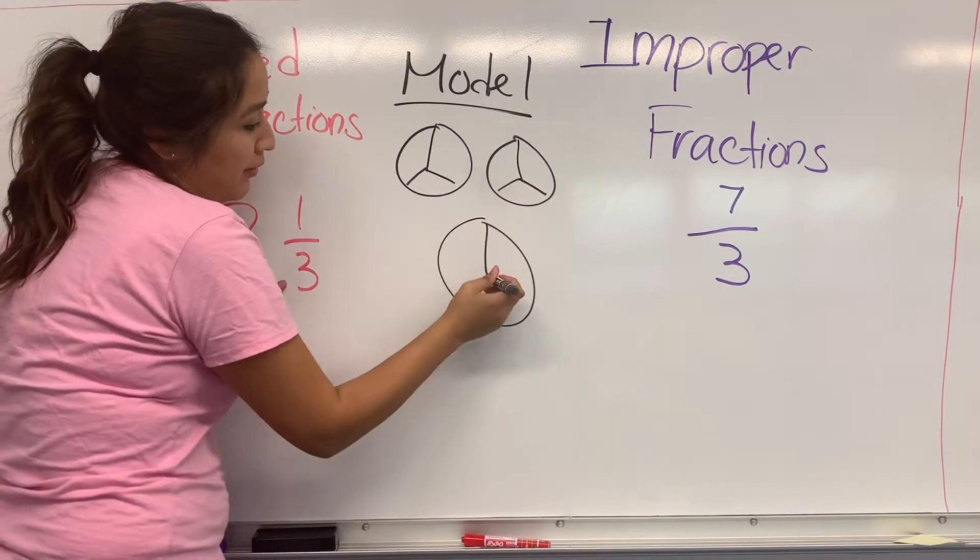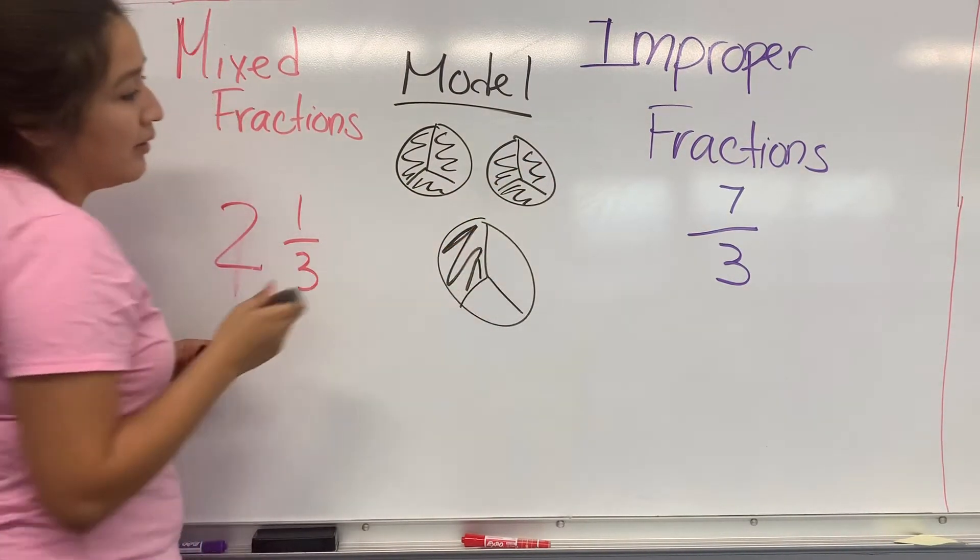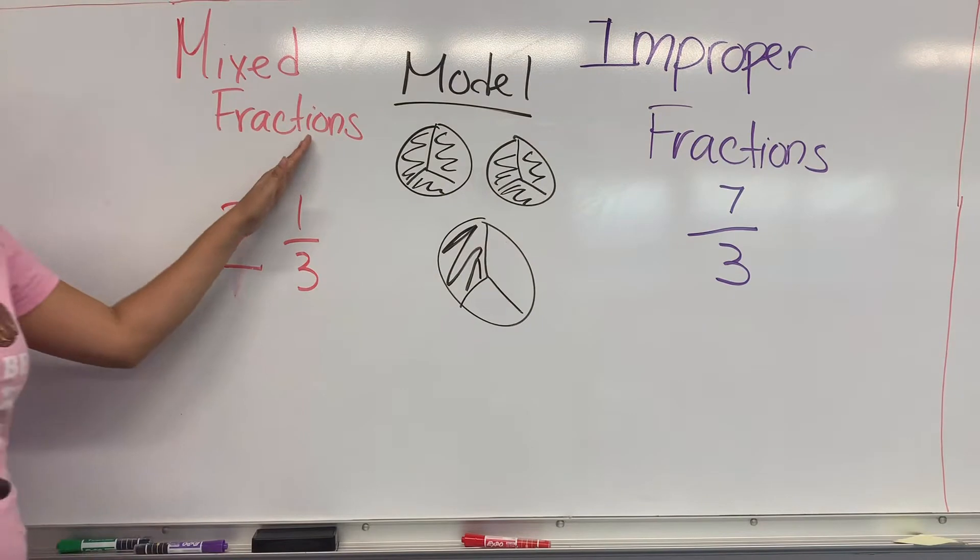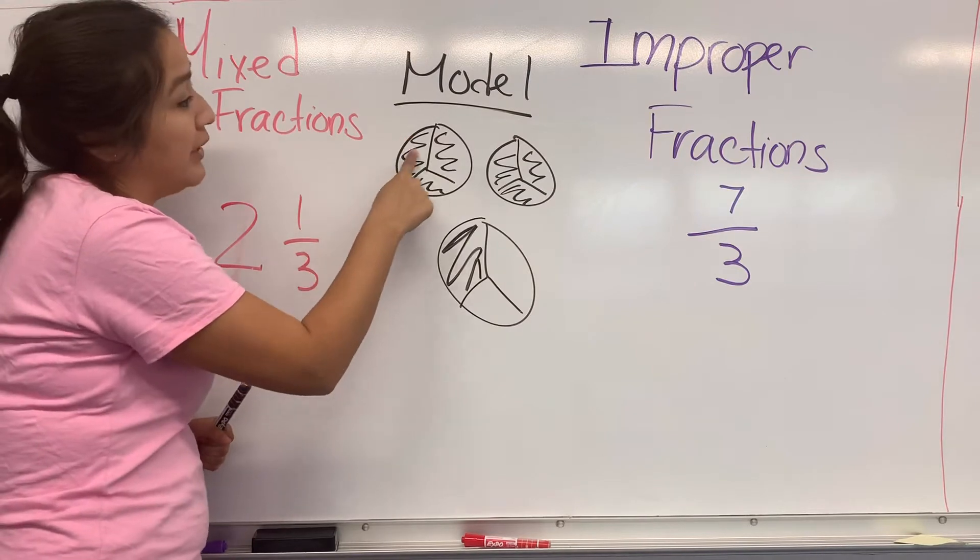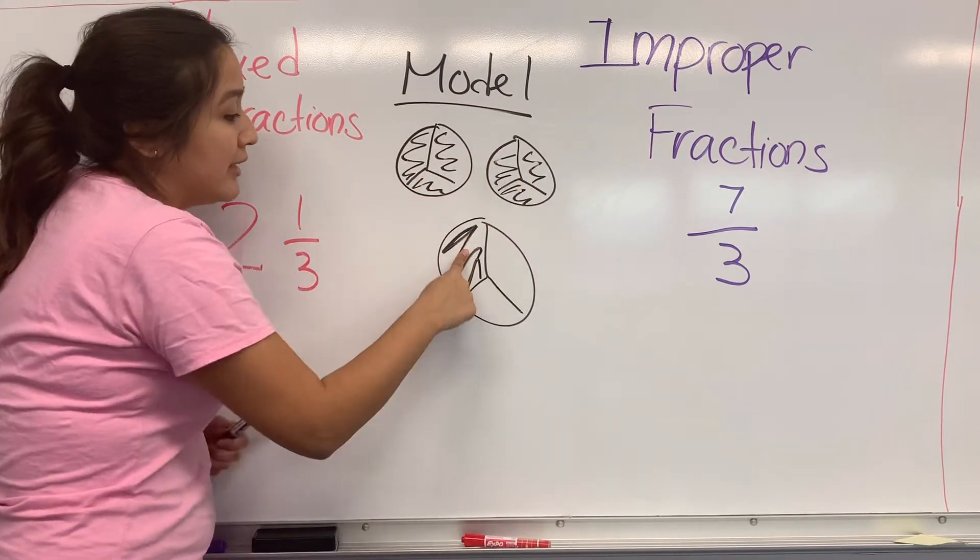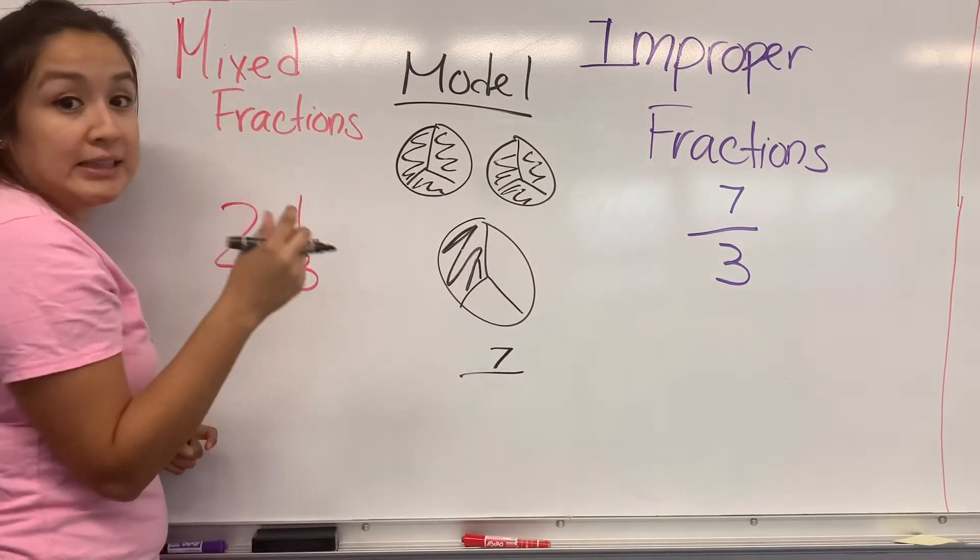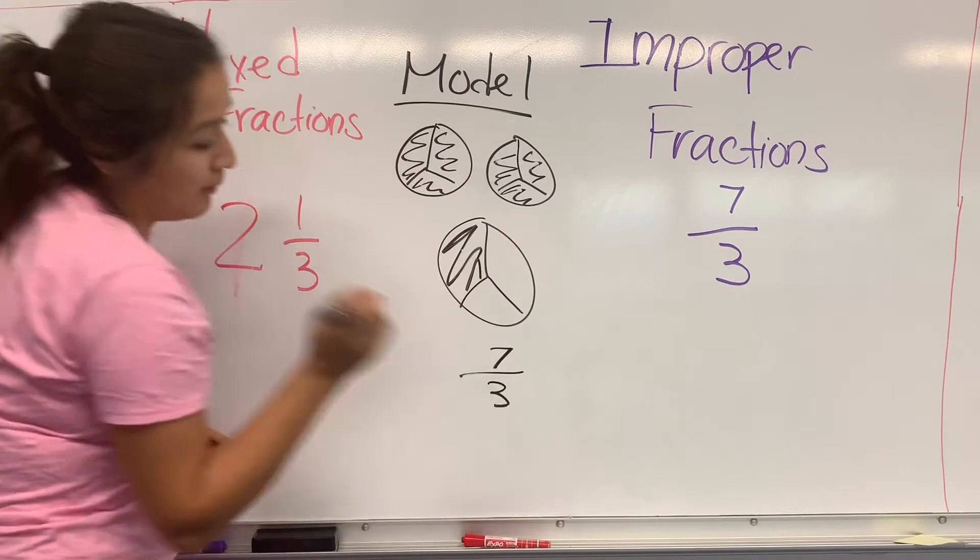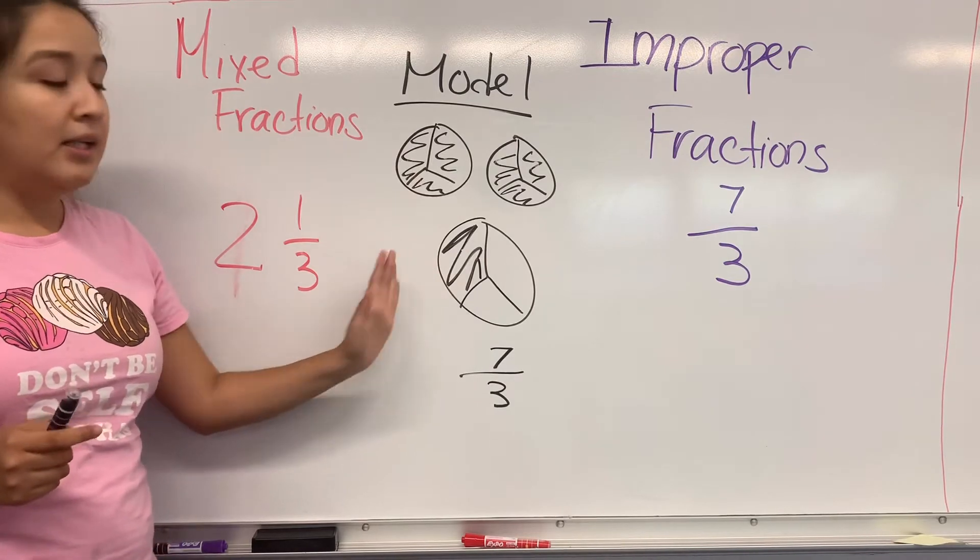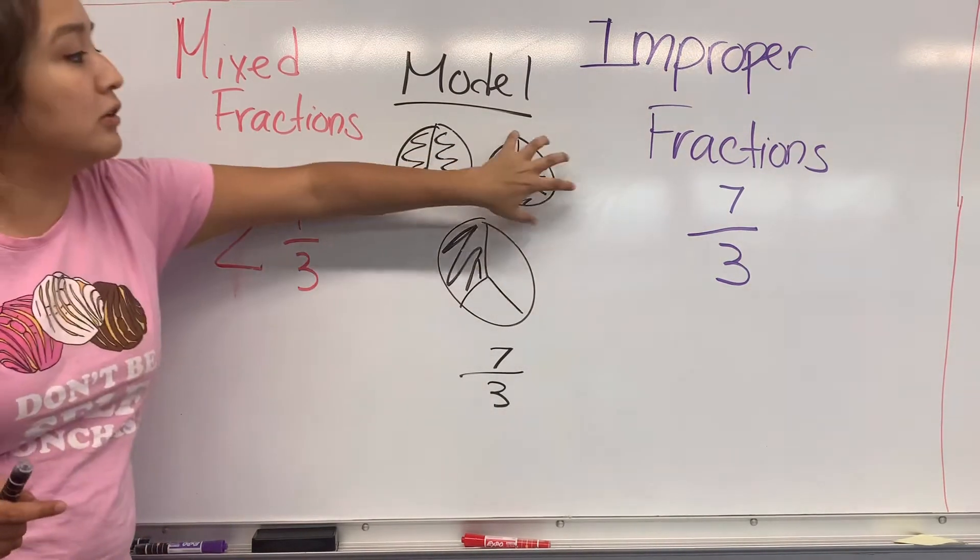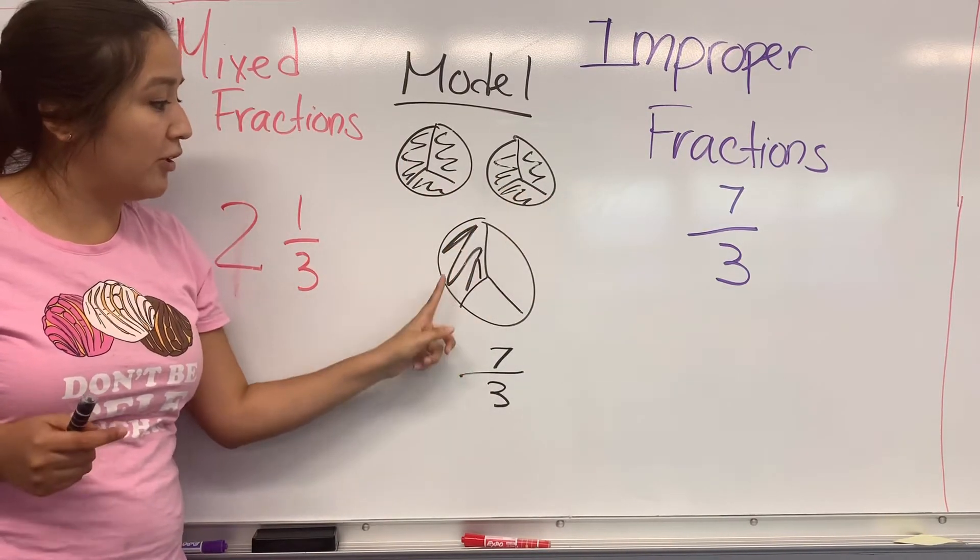Since this is two wholes, all of this is filled up, and here's my 1/3. In order to go from here to here, all you have to do is count up the pieces that are there. So we have one, two, three, four, five, six, seven. And each slice was in thirds, so it becomes 7/3. That's what the picture version is basically telling us. From going from mixed to improper, you're just counting each individual slice. That's your numerator, and you keep your same denominator.